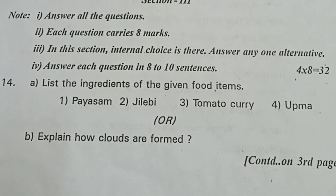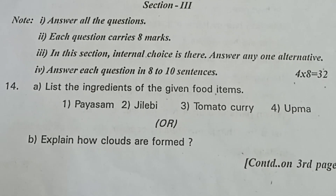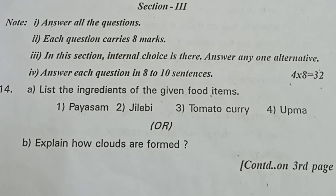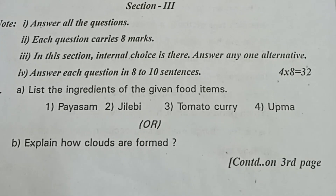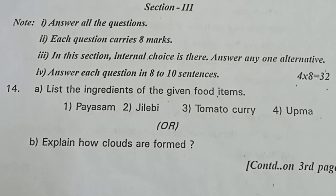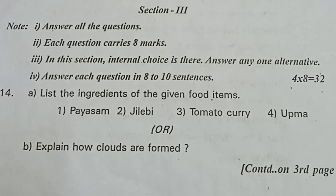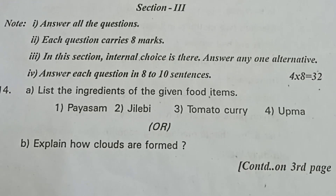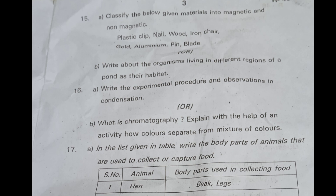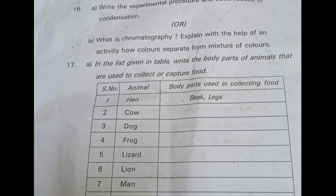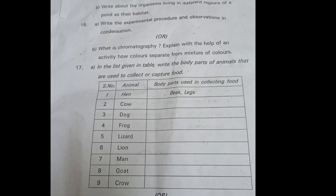Section 3: each question carries 8 marks. In this section, internal choice is available — answer any one alternative. Answer each question in 8 to 10 sentences. Questions 14, 15, 16, and 17 each have options A or B. Write any one option per question to get 8 marks each.